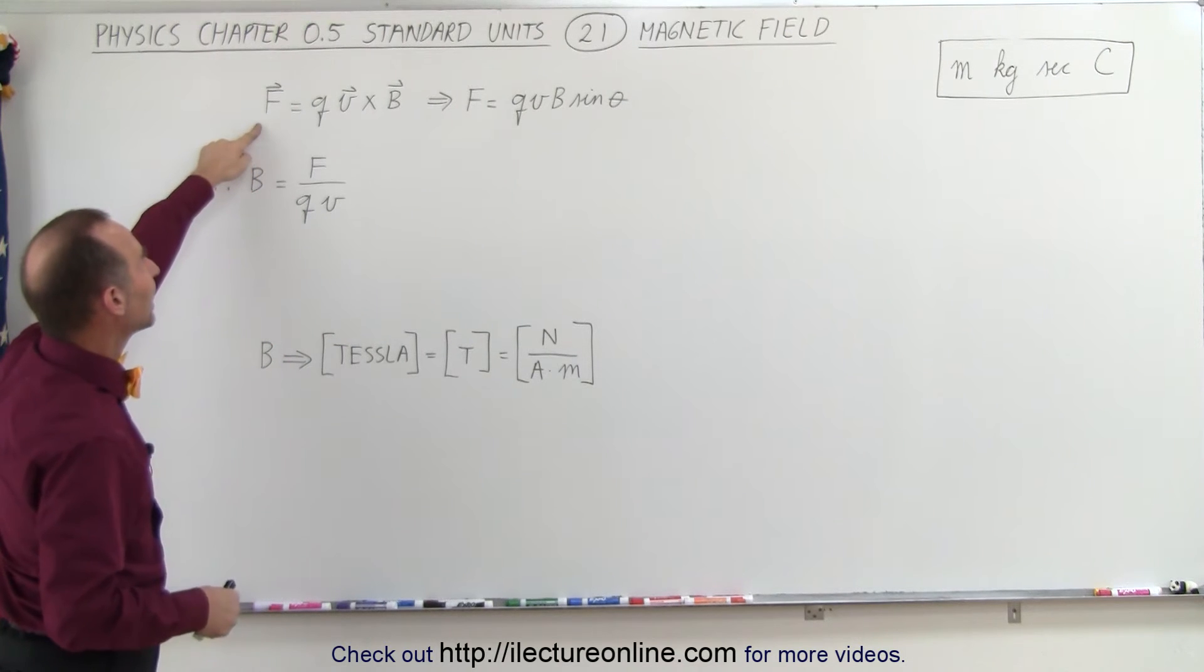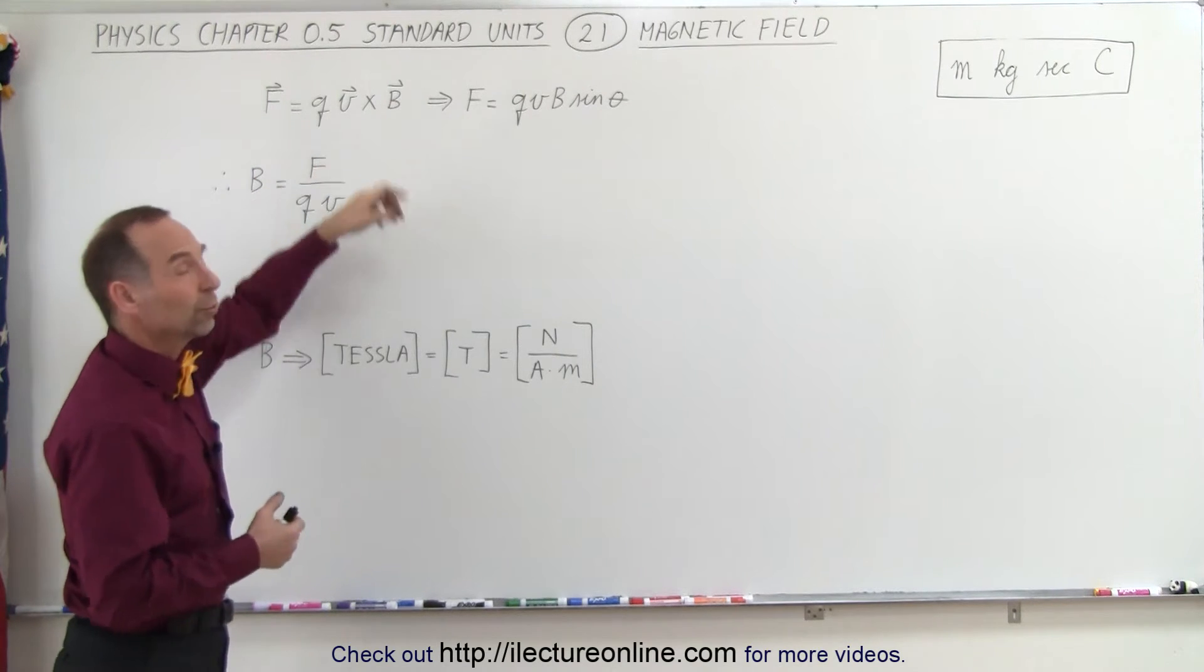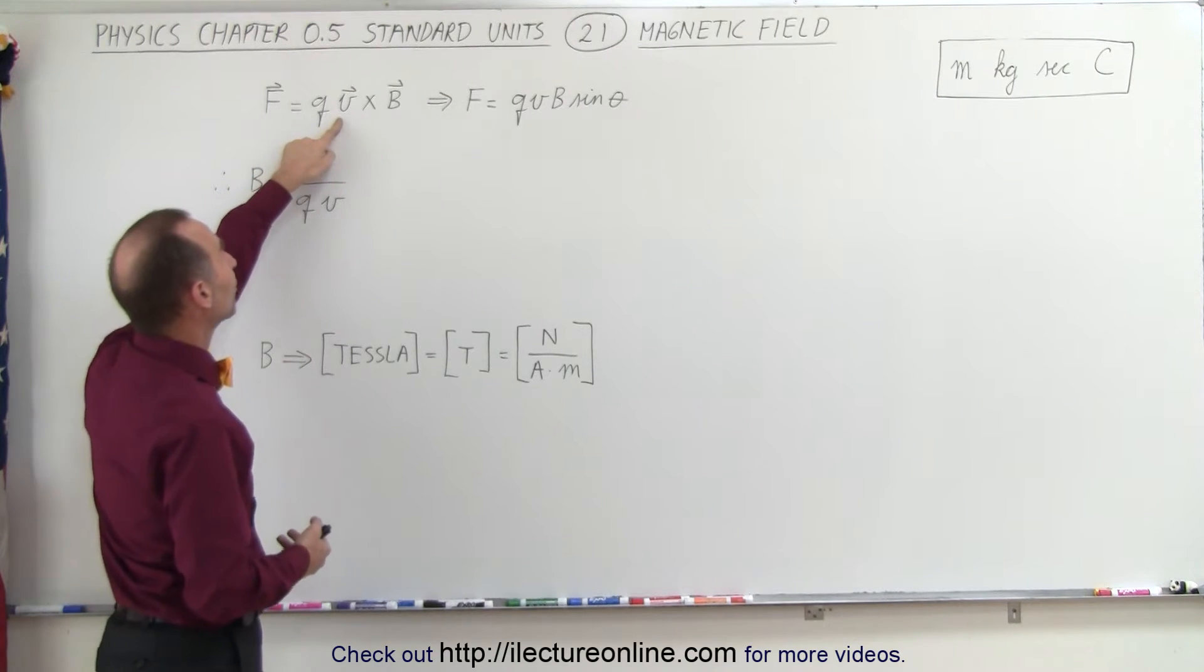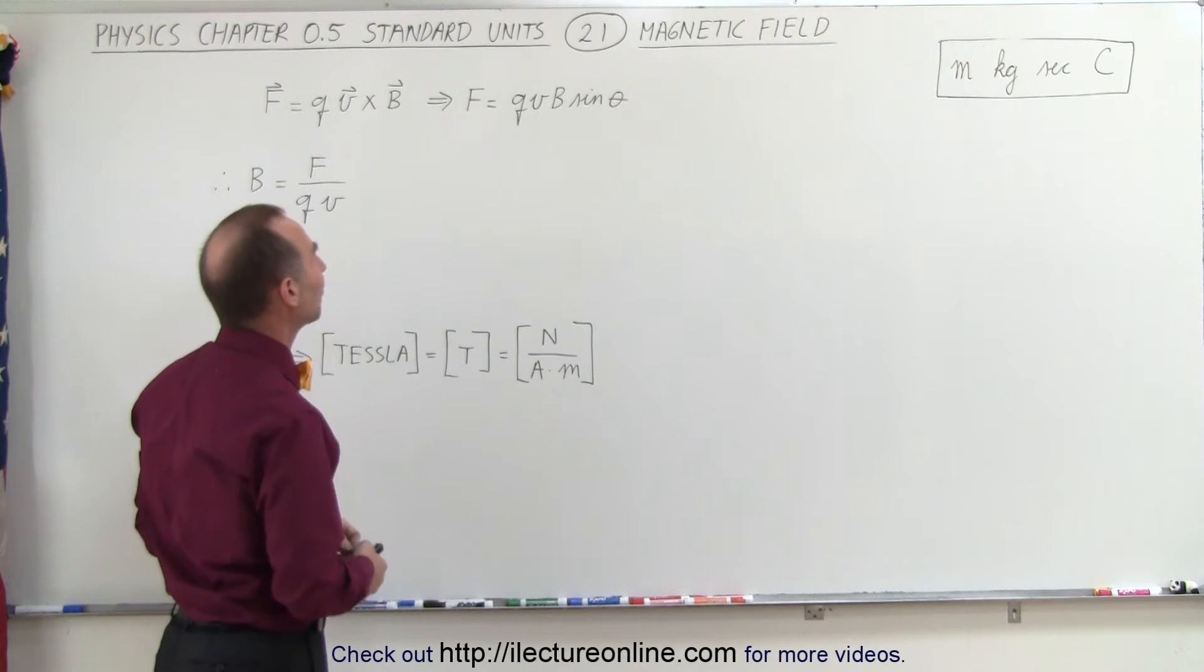We're first going to calculate the units by taking the force experienced by a charge moving through a magnetic field, which can be calculated as follows: it is equal to the charge times the cross product of the velocity of the charge object times the magnetic field.